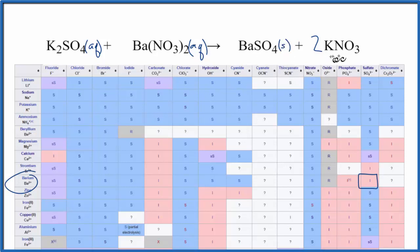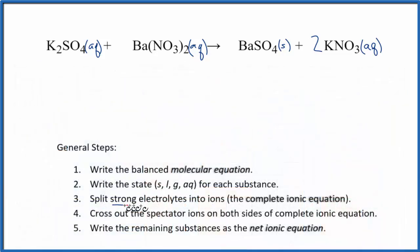For the potassium nitrate, again, nitrate's very soluble, so that's going to be aqueous as well. So now we have the states. Once we've written these states, we'll split the strong electrolytes apart into their ions.